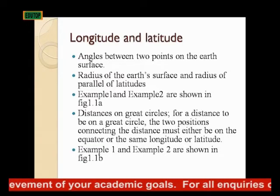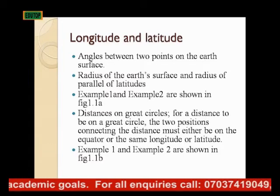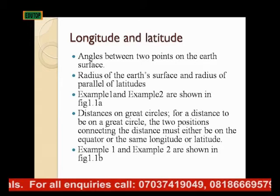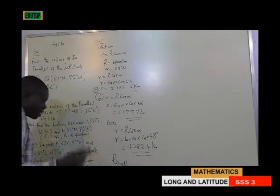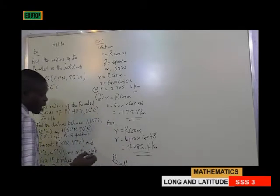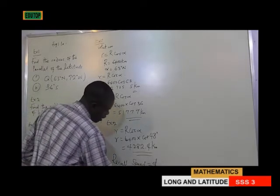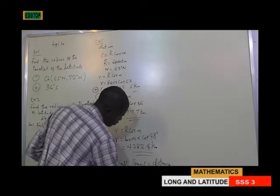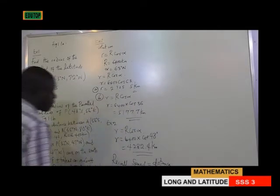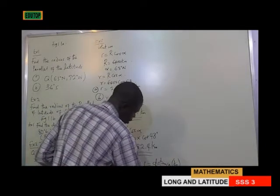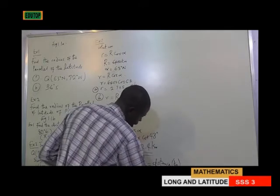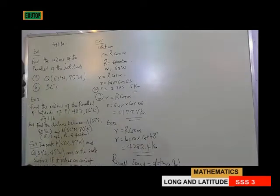Before we approach examples 1 and 2 in figure 1.1b, it should be noted that you will need to recall the relationship between speed and distance. Speed equals distance over time. If the distance is in kilometers and the time is in hours, then the speed will be in kilometers per hour. We must note this because we will need this formula subsequently.